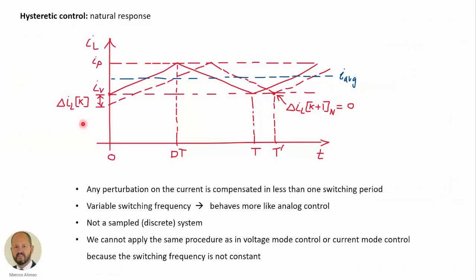Let's now talk about the dynamic behavior of this control method. As we have seen in previous videos, if we do a perturbation on the current — the natural response — then the current increases and reaches the peak value, the switch turns off, the current decreases until reaching the valley value, and the perturbation has been corrected. The difference with other control methods is that now we have a variable switching period. The switching period after a perturbation increases compared to before. So we are not sampling the current once per switching period; instead, the switching period behaves more like an analog variable.